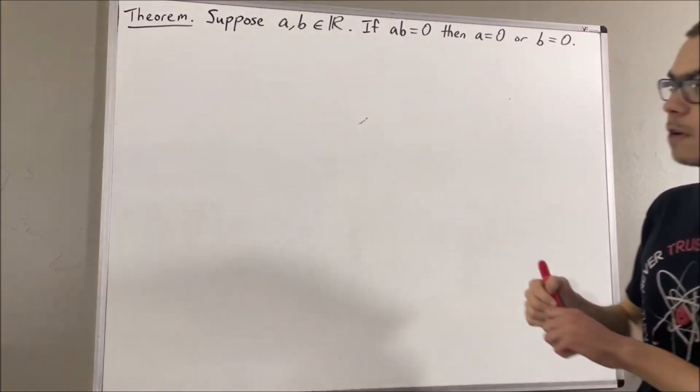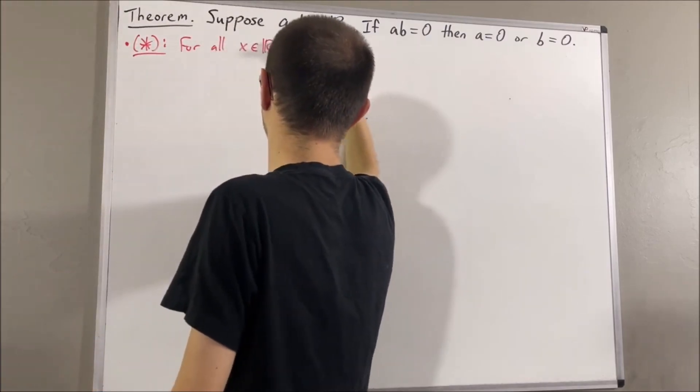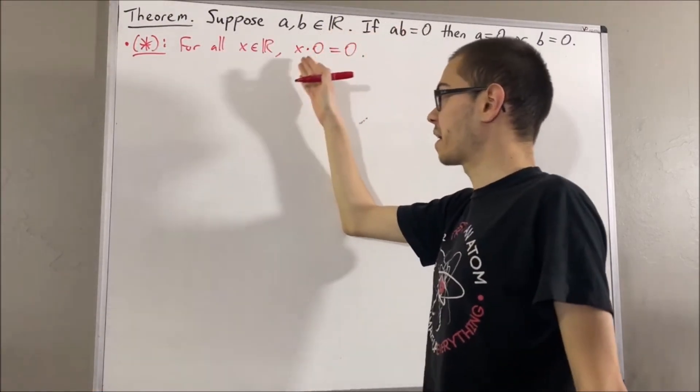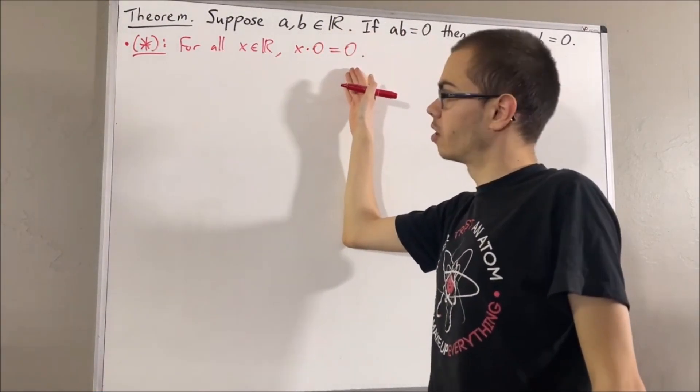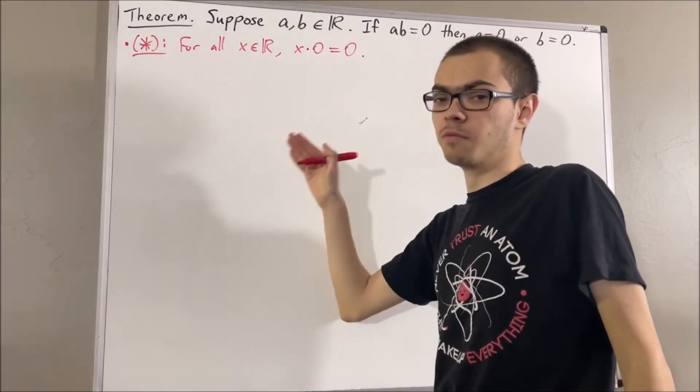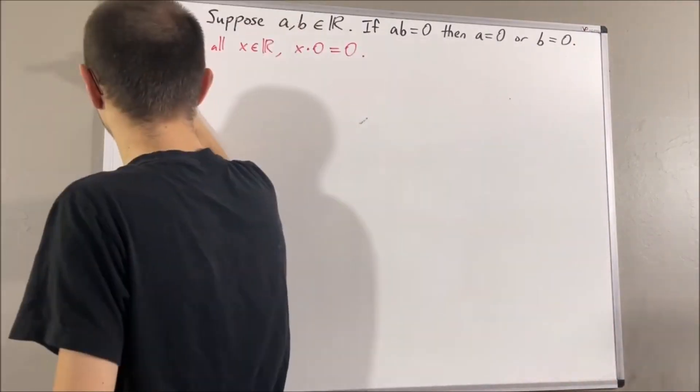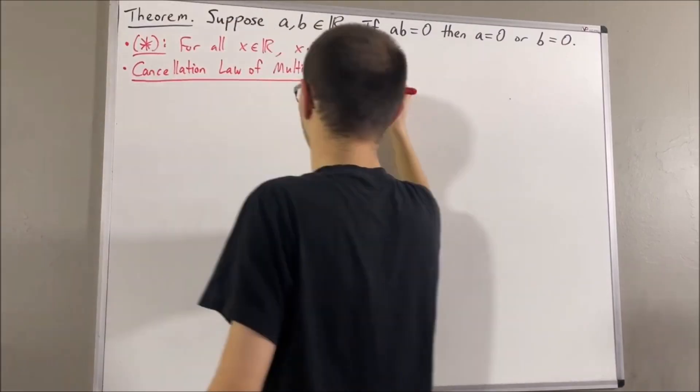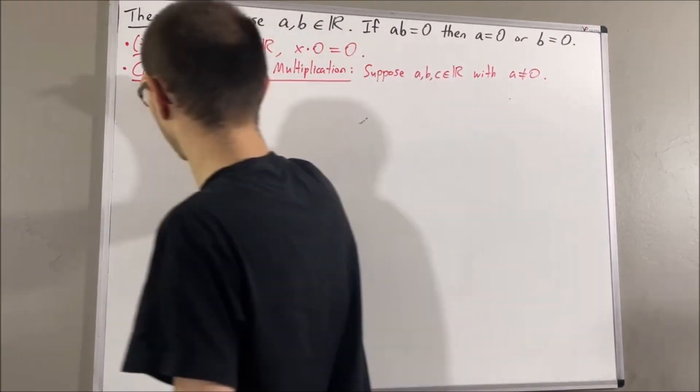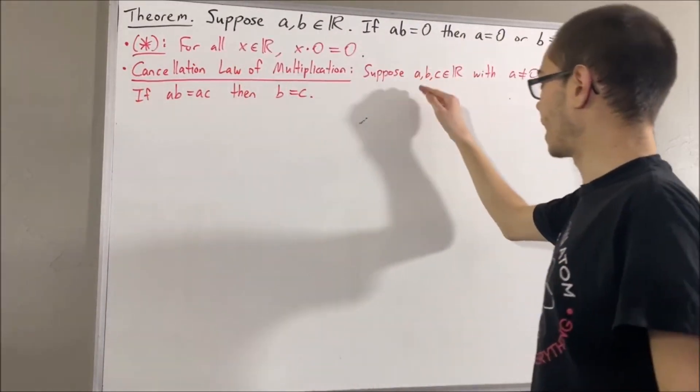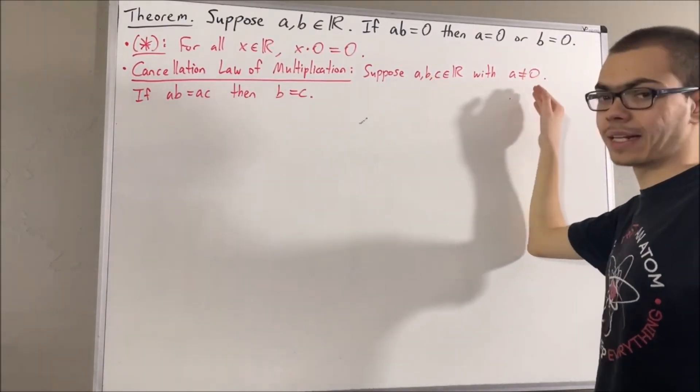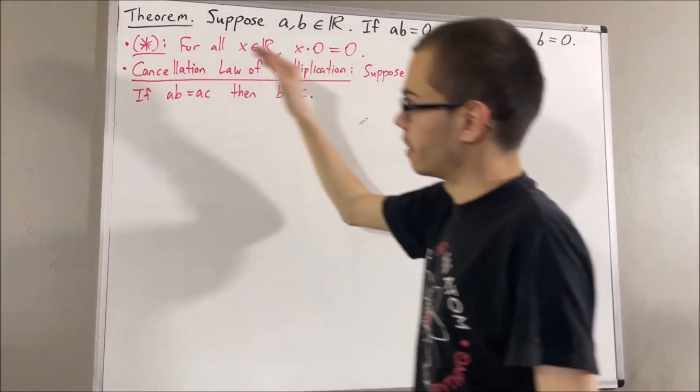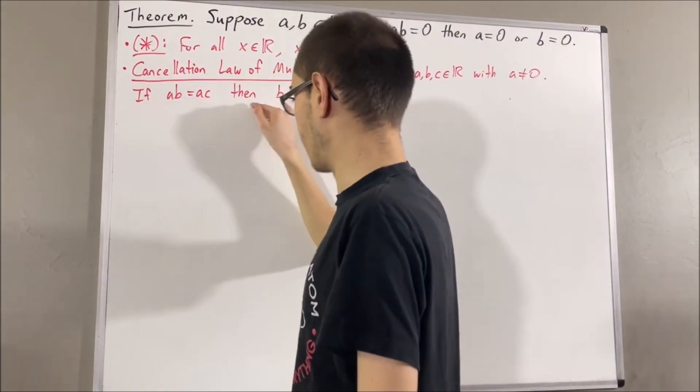One of those results is the following. For all real numbers x, x times 0 is equal to 0. We've also proven the cancellation law of multiplication, which says the following. Suppose A, B and C are real numbers with A not equal to 0. If AB is equal to AC, then B is equal to C.